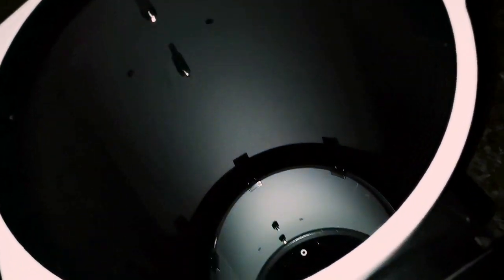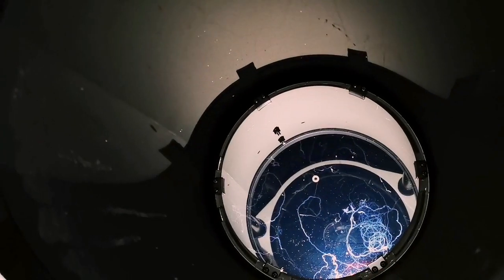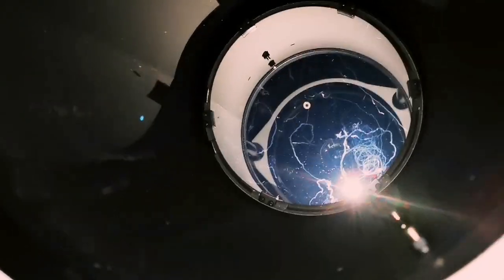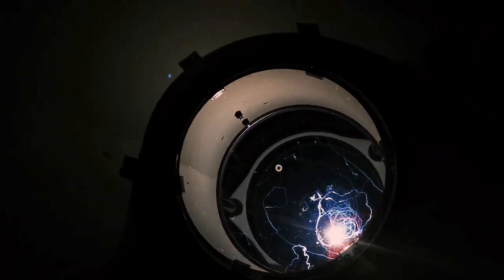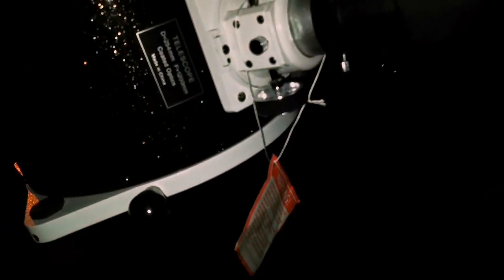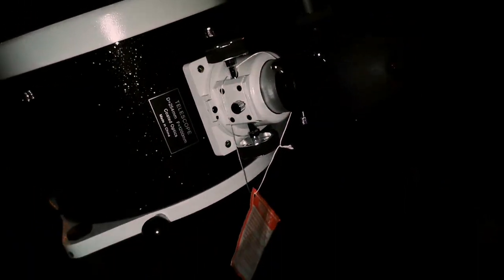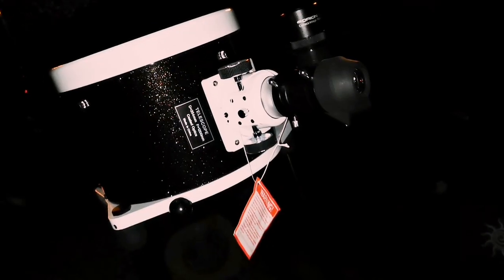It's bigger than the 8-inch which is normal size for any SCT Schmidt Cassegrain or anything else. The mirror is quite huge and it can condensate like this one. But it is new, practically this telescope is almost new. It's second-hand but it's like new.